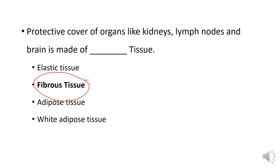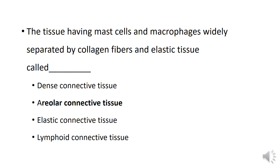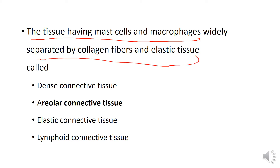Brown adipose tissue helps protect the core organs like the kidney, lymph node, and brain. These organs are made of fibrous tissue. The tissue has macrophages and muscle cells, widely separated by collagen fibers and elastic fibers.